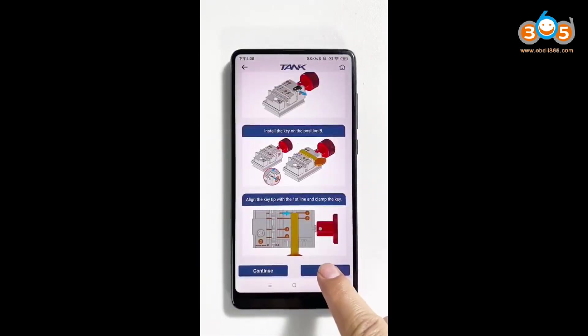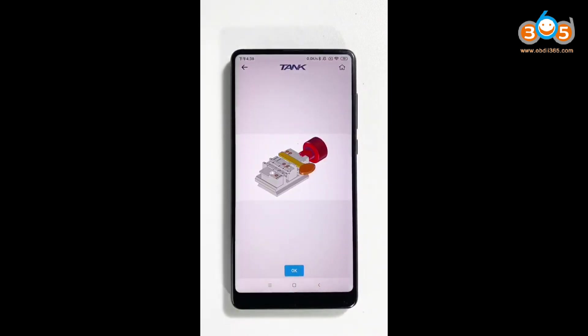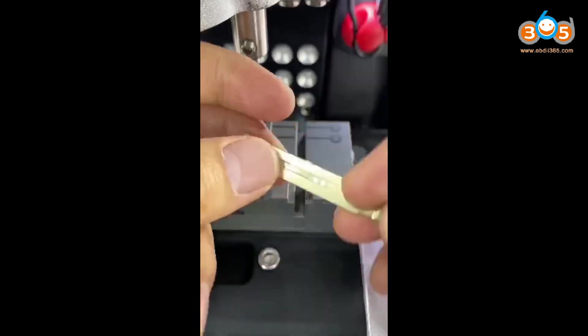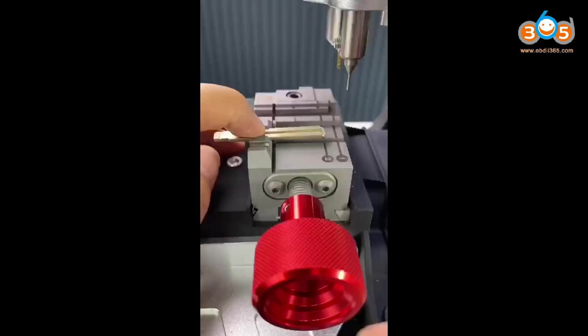Enter this option. It shows how to install the key blank on the machine. Install it, depending on getting picture.